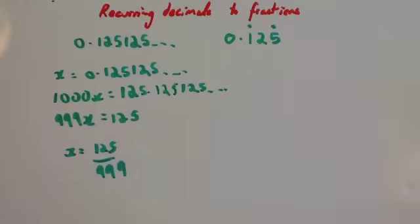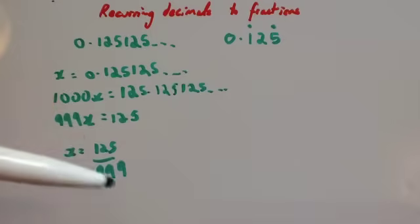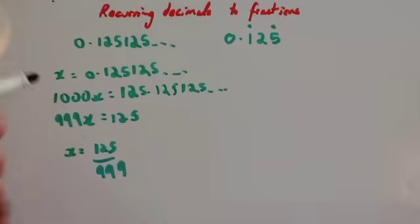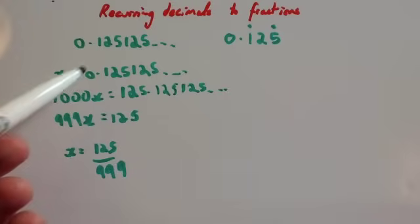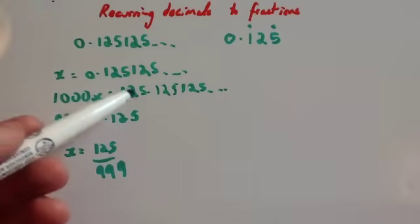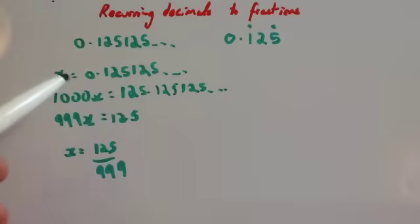It might be worthwhile to check whether you can cancel that fraction down, but that's how you'd write it as a fraction. Because it's got 3 recurring digits — 125125 — we needed to times by 1000, then subtract and divide.